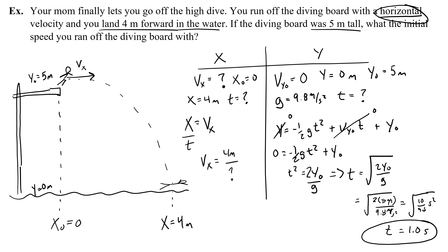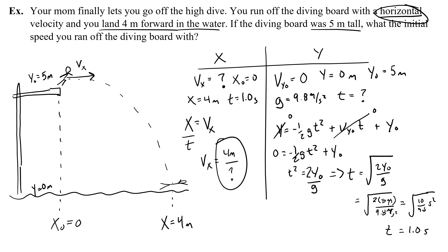The time is 1.0 seconds. Now I can use that in the x column: vx = 4 meters / 1.0 second = 4 meters per second. So you ran off the diving board with an initial horizontal velocity of 4 meters per second.